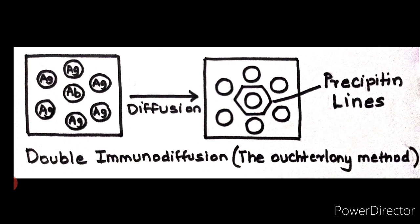The interpretation of precipitating lines following double immunodiffusion explains the identity between the antigens.